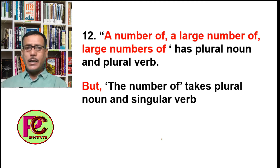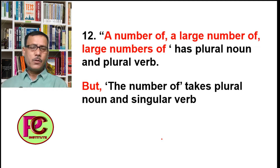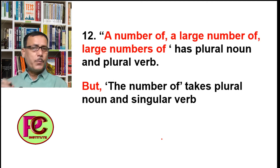'A number of', 'a large number of', or 'large number of' means 'many' or 'in a very large quantity'. So when any countable noun is present in a large quantity, that noun will also be plural, and if the noun is plural, the verb will also be plural.